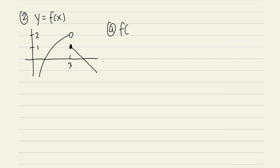For part a, what is f of 3? The answer is 1. This notation means x is exactly equal to 3, so you look at the graph at x = 3 and find the closed circle. The y value of that closed circle is 1, so f of 3 equals 1.